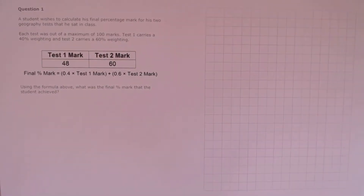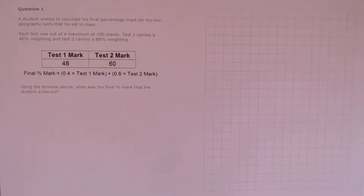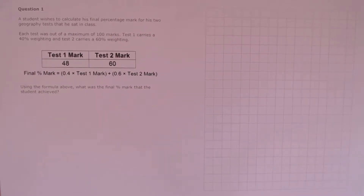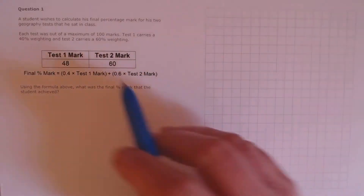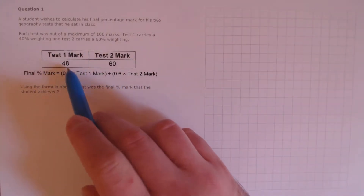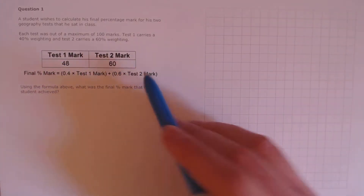Question 1. A student wishes to calculate his final percentage mark for his two geography tests that he sat in class. Each test was out of a maximum of 100 marks. Test 1 carries a 40% weighting and test 2 carries a 60% weighting. Using the formula above, what was the final percentage mark that the student achieved? We just need to substitute the test scores into the formula to get our final percentage mark.